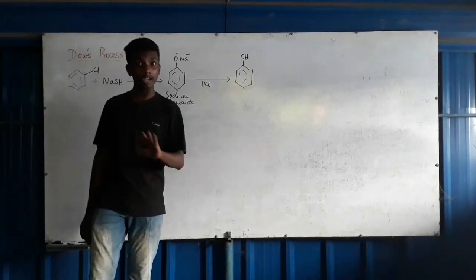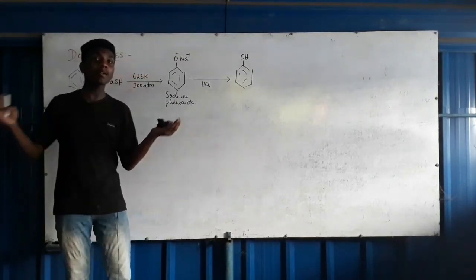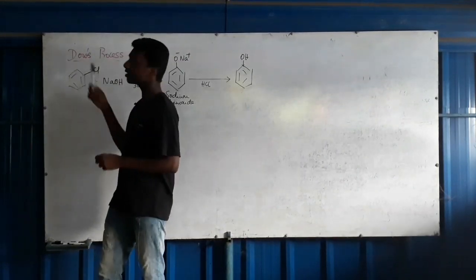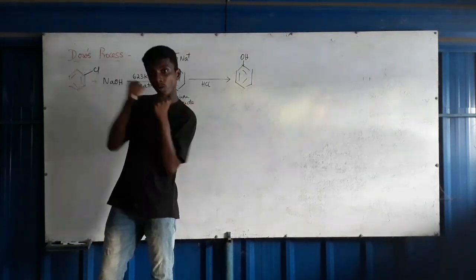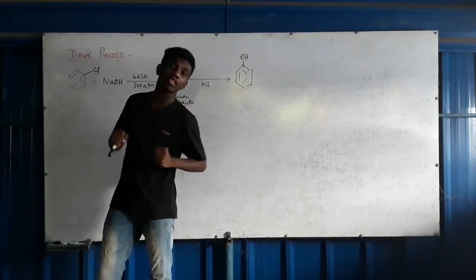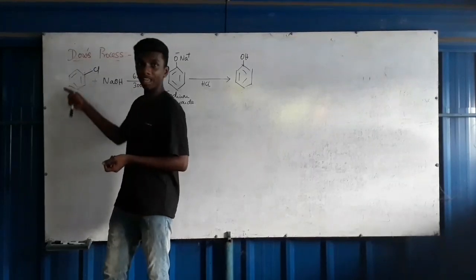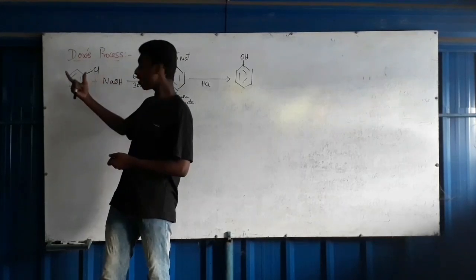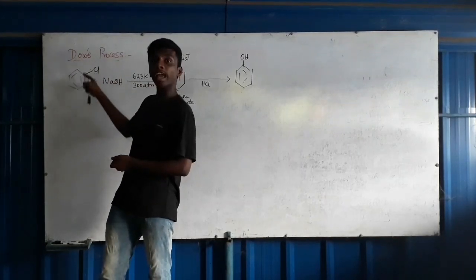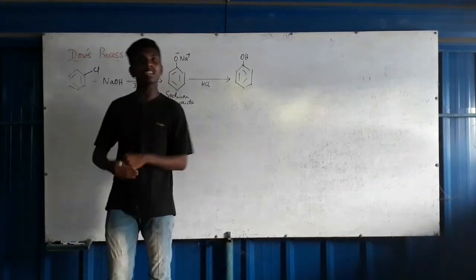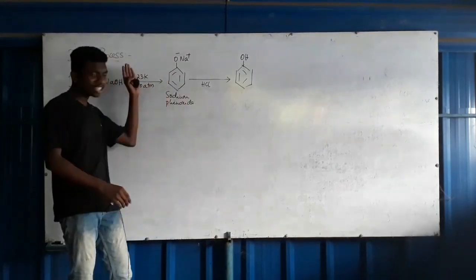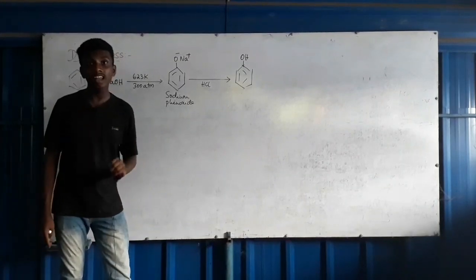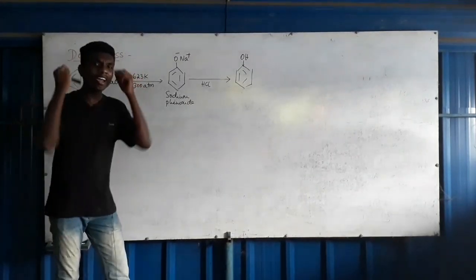In chlorobenzene, the carbon bearing chlorine is sp2 hybridized, which makes it more electronegative. The partial double bond character of the C–Cl bond, due to lone pair donation from chlorine into the ring, reduces the reactivity toward nucleophiles.